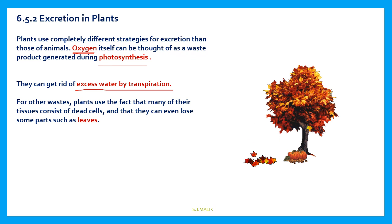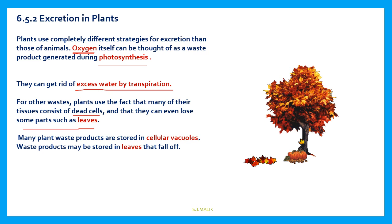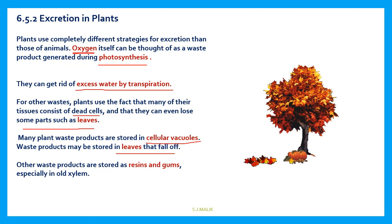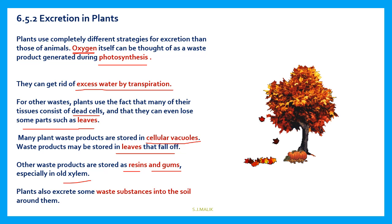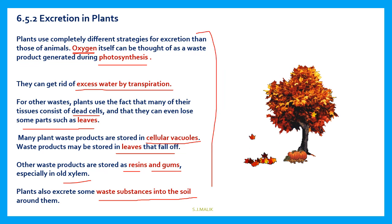For other waste, plants use the fact that many of their tissues consist of dead cells, and they can even lose some parts such as leaves — that is also excretion. Many plant waste products are stored in cellular vacuoles. Waste products may also be stored in leaves, which then fall — that is also an example of excretion. Other waste products are stored as resins and gums in old xylem. Plants also excrete some waste substances into the soil around them.